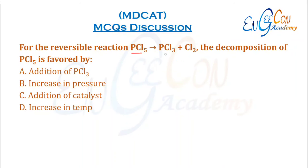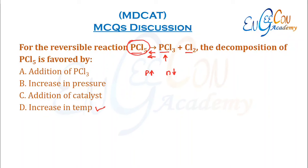For the reversible reaction PCl5 ⇌ PCl3 + Cl2, decomposition of PCl5 is favoured by which condition? Adding PCl3 reverses the reaction (Le Chatelier's principle). Increasing pressure drives the reaction toward fewer moles, so it reverses. A catalyst does not change concentrations. Increasing temperature favours decomposition because it is an endothermic reaction, so forward direction is favoured.